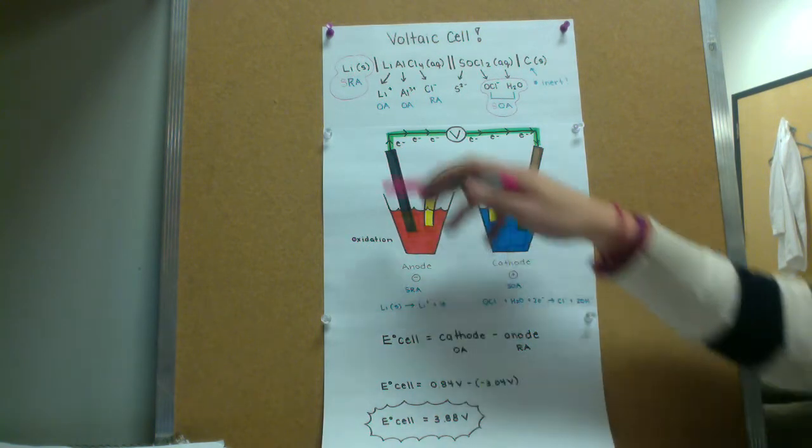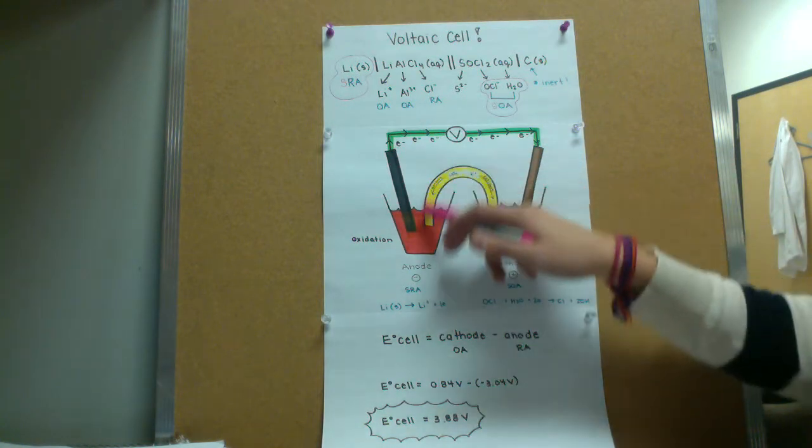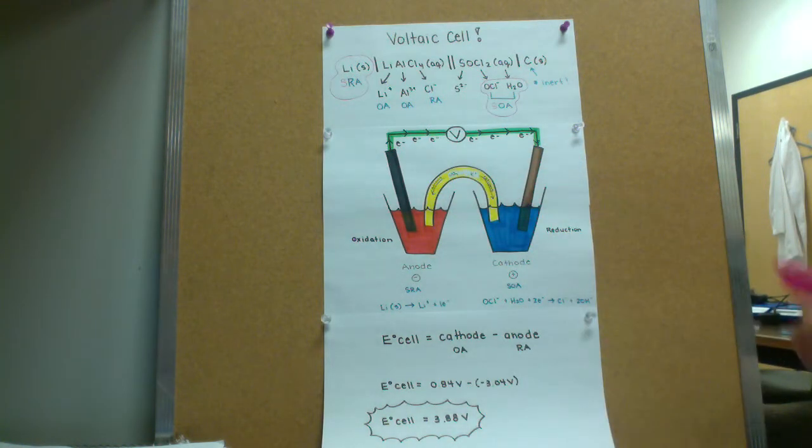In essence, we have the circuit going on. To complete the circuit, we have to also have the salt bridge. The salt bridge contains something like potassium nitrate, an inert solution.